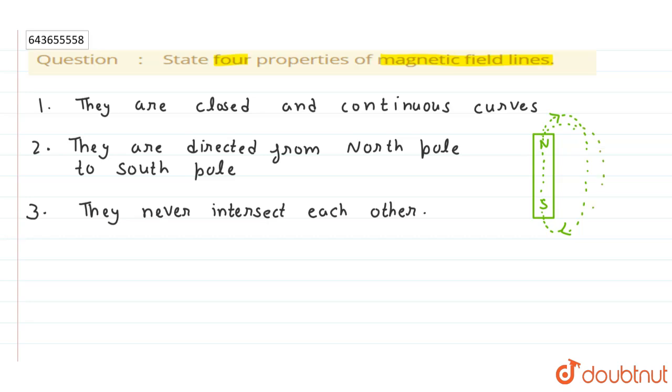So they will not intersect each other, okay? The fourth property is they are denser near the poles. This means that